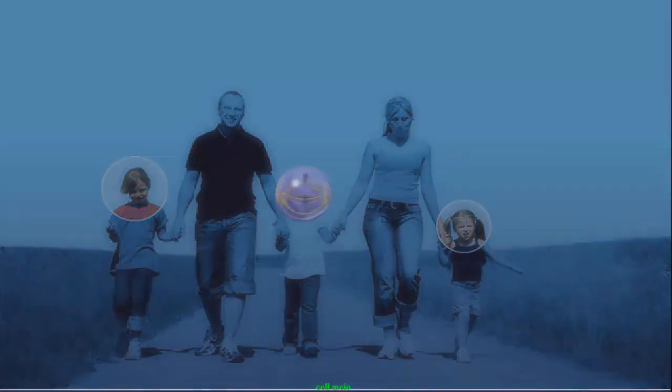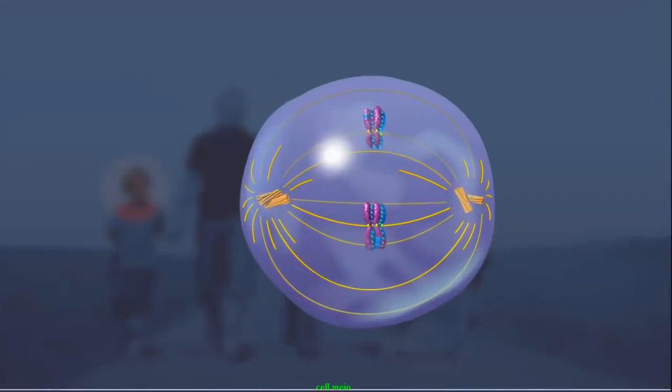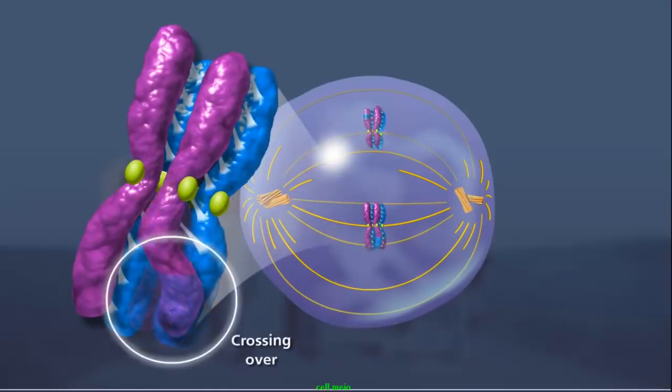The diversity comes from several sources. In prophase I, non-sister chromatids can exchange DNA through crossing over, increasing the genetic diversity of individual chromatids.